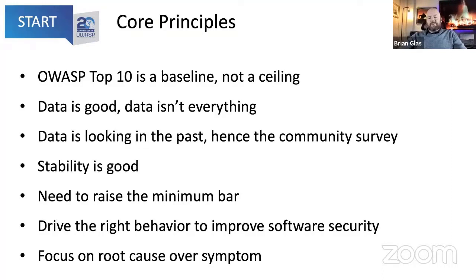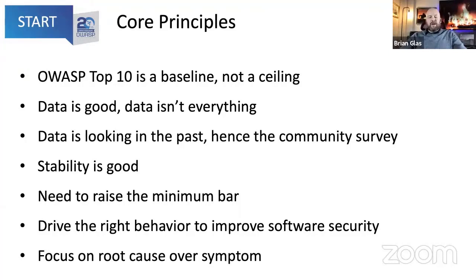The next principle is raising the minimum bar — on each iteration we're trying to figure out how to raise the bar and drive the industry to improve. That feeds into driving the right behavior: since the Top 10 is a pseudo-standard, people will build things against it. If we choose the wrong categories, or categories that cause regression in some spaces, that's the last thing we want. We try to be really careful that the 10 categories we produce will actually push people to develop in new areas.